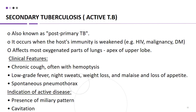Secondary tuberculosis, also known as active or post-primary tuberculosis, occurs when host immunity is weak — for example in HIV, malignancy, or diabetes mellitus. It affects the most oxygenated part of the lungs, that is the apex. Clinical features include chronic cough with hemoptysis, low grade fever, night sweats, weight loss, malaise, loss of appetite, and spontaneous pneumothorax.